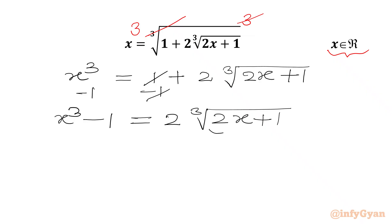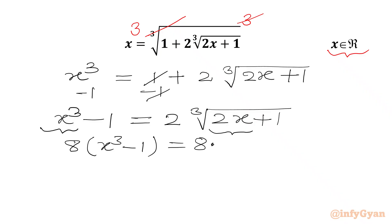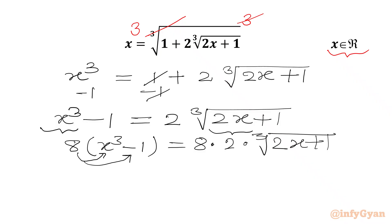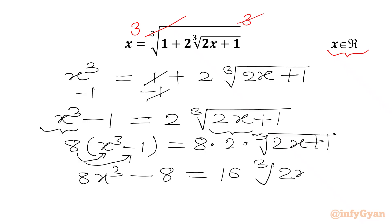Now on the RHS we have 2X. Can we create 2X on the LHS also? So let's multiply both sides by 8. So 8 times X cube minus 1 will equal 8 times 2 times cube root of 2X plus 1. We multiply 8 through to get 8X cube minus 8 equal to 16 times cube root of 2X plus 1.